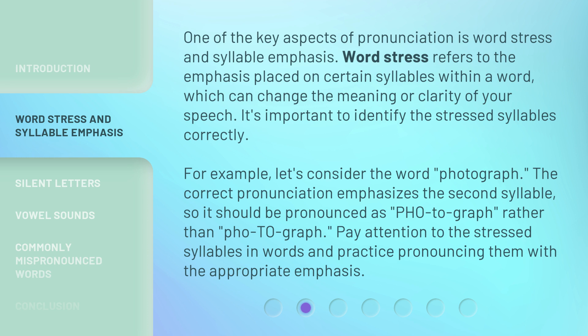One of the key aspects of pronunciation is word stress and syllable emphasis. Word stress refers to the emphasis placed on certain syllables within a word, which can change the meaning or clarity of your speech. It's important to identify the stressed syllables correctly. For example, let's consider the word 'photograph.' The correct pronunciation emphasizes the second syllable, so it should be pronounced as 'photograph,' rather than 'photograph.' Pay attention to the stressed syllables in words and practice pronouncing them with the appropriate emphasis.